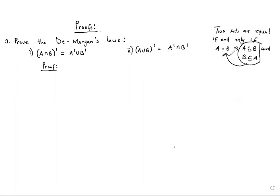So if we want to show that (A∩B)' equals A'∪B', then we should show two things: one, that (A∩B)' is a subset of A'∪B', and two, that A'∪B' is a subset of (A∩B)'. If we can do that, then we'll have shown that the two sets are equal. To do that, we'll start from the left-hand side.